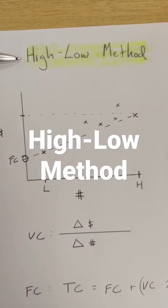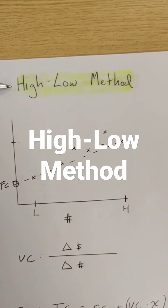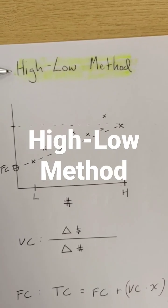Let's look at the high-low method, a quick way to understand our fixed and variable costs by analyzing our total costs and corresponding activity.